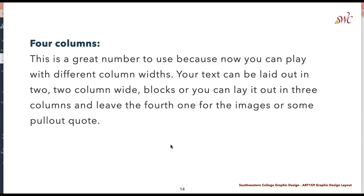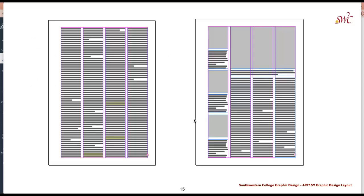For this project I would suggest using four columns on each page — a total of eight columns within your spread. This creates versatility where you can use multiple columns and different spatial zones or limit them to different modules if you add rows as well. Your text can be laid out two columns wide or span multiple columns, and you can often leave the fourth column for images, a pull quote, or white space.